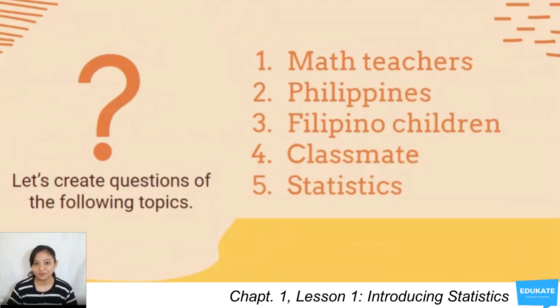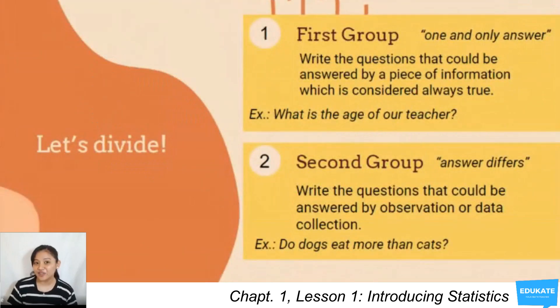Now, after creating your five questions, let's divide them into two groups. The first group has questions with a correct answer which is based on fact, and you don't need the process of inquiry to answer such questions. These questions can be answered by a piece of information which is always considered true. For example, there is one and only one correct answer.